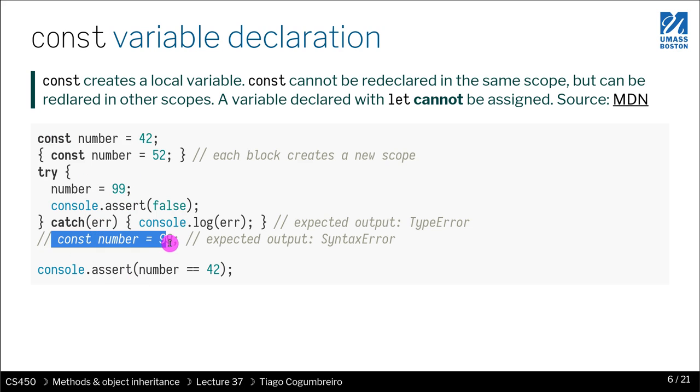So for instance, here, which is in the same scope as outside, I would not be able to assign something else to number. That would get an error.